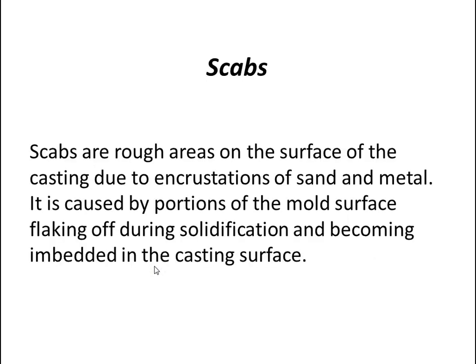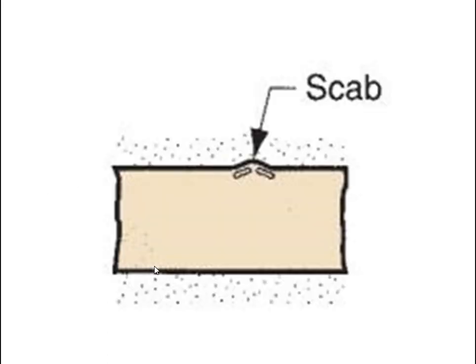Scabs are rough areas on the surface of a casting due to incrustations of sand and metal. They are caused by portions of the mold surface flaking off during solidification and becoming embedded in the casting surface. There is a figure showing the scabs defect.